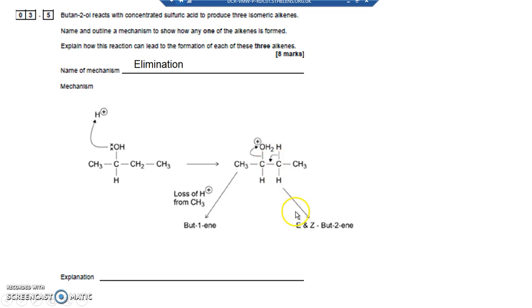So that will, in this case, make but-2-ene. But for carbons, the OH2+ disappears as water. So the H disappears as H+, and so we're just going to end up with four carbons with a double bond in between carbons 2 and 3. So it's but-2-ene.